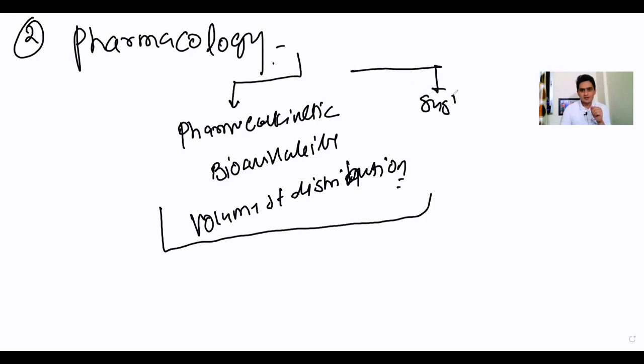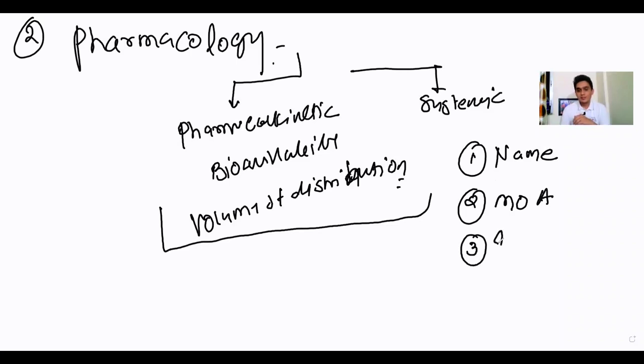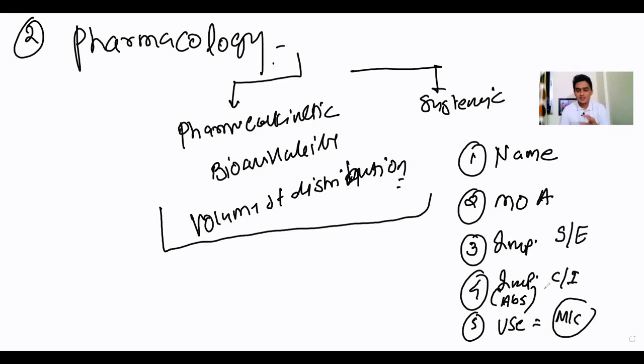Second part is systemic pharmacology - system-related drugs. For any drug you're reading, you should know: the name, mechanism of action, important side effects, important or absolute contraindications, and the most common use. If this drug is occasionally used in something, you should know that too.